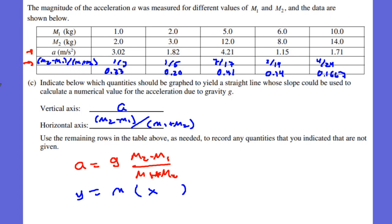Part C is only worth one point — for indicating the correct variables in the new data row. You get one point for the correct computed values.